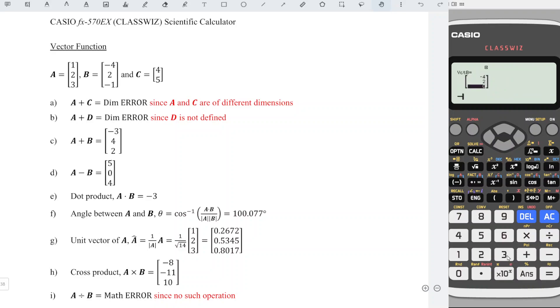Done. Next, define vector C, dimension 2: 4 and 5. Done. Remember to press AC before we can perform calculations.